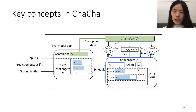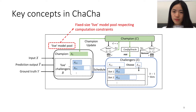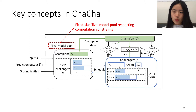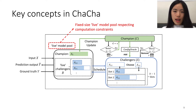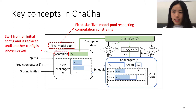First, we introduce the concept of the live model pool, the size of which is fixed. It contains all the live models allowed in the online learning system. This concept is designed to respect the sharp computation constraint mentioned earlier, and we characterize all the configurations under consideration into one Champion and a set of Challengers.